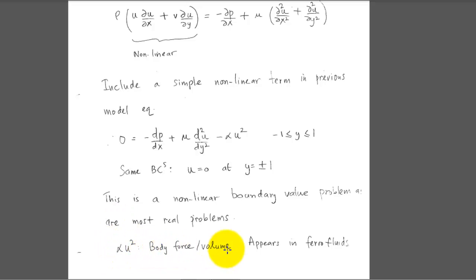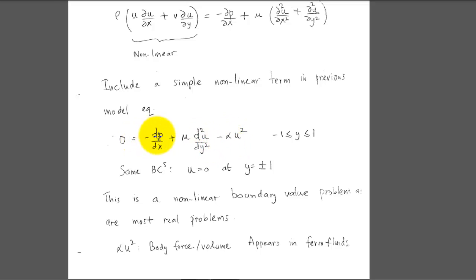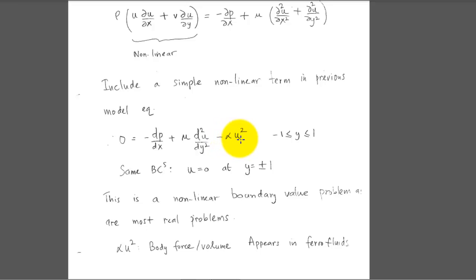This is a nonlinear boundary value problem, as are most real problems in CFD. The term α·u² represents a body force per unit volume, and it appears in ferrofluids — not in conventional fluids. The pressure term pushes the particle in the direction of flow, so it will be positive if dp/dx is negative. If α is positive, the α·u² term is negative, acting as a drag force on the fluid particle.